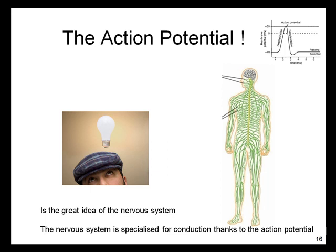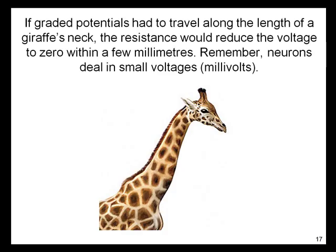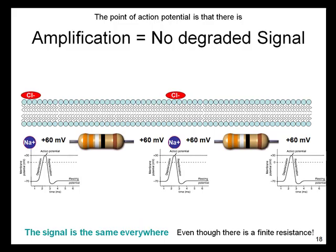The action potential is the great achievement in the evolution of the nervous system. The nervous system is specialized for conduction over long distances thanks to the action potential. The only problem with the action potential is that it is slow compared to electrotonic transmission of an electric field. However, the action potential has an advantage in that the signal is amplified as it goes along. Amplification means that there is no degraded signal — the signal is the same everywhere, even though there is a finite resistance.